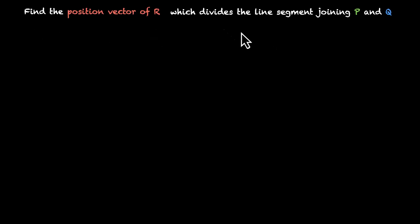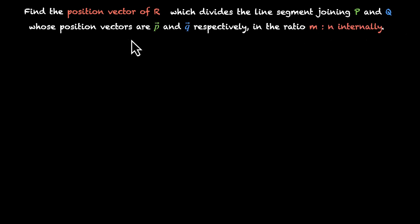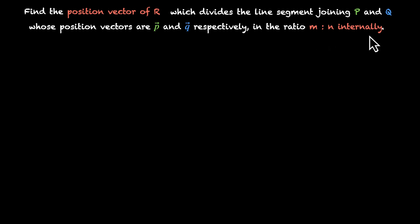In this video, we will derive the section formula for vectors in 3D. We have to find the position vector of r which divides the line segment joining p and q, whose position vectors are p vector and q vector respectively, in the ratio m is to n internally.